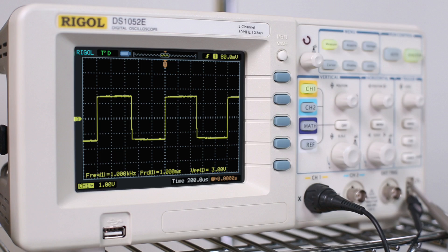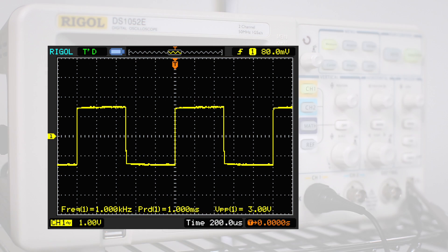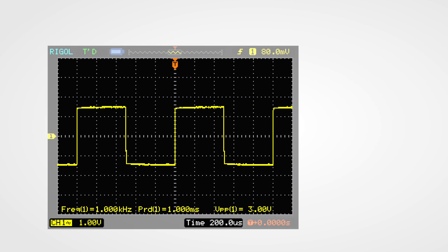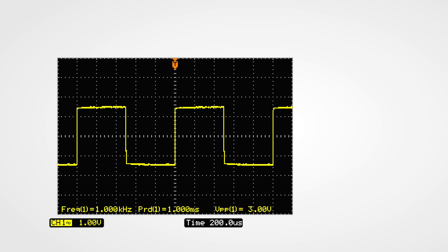A digital scope like this one makes taking measurements very easy. We can see all of our current settings right here at the bottom of the screen. Right now, each vertical unit represents one volt, and each horizontal unit represents 200 microseconds.